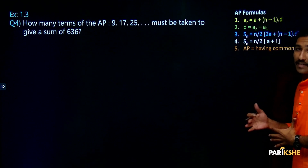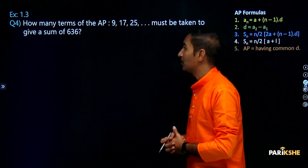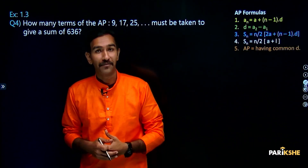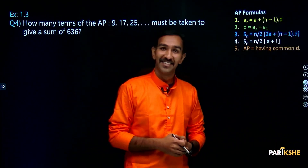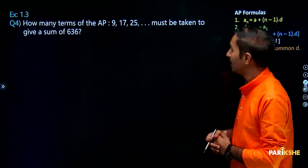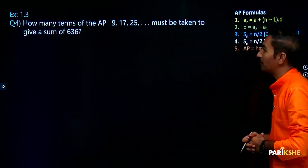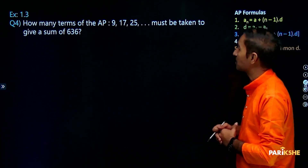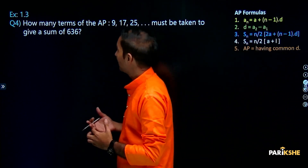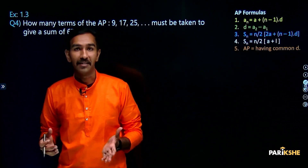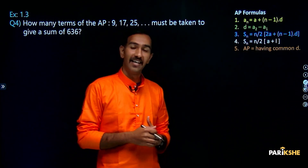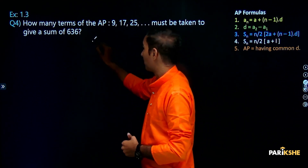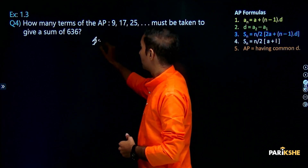Exercise 1.3, question number 4. So let's look at the question: How many terms of AP 9, 17, 25 must be taken to give a sum of 636? Let's write the solution and see.